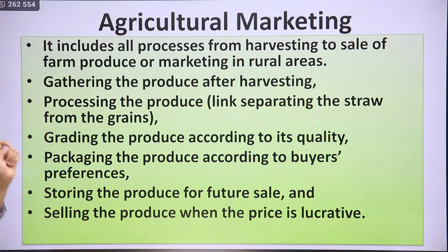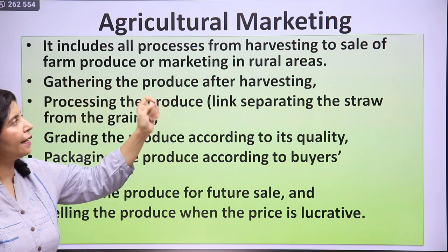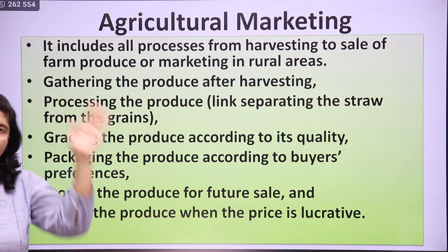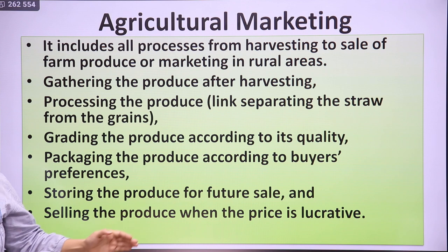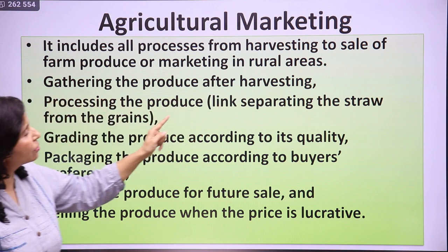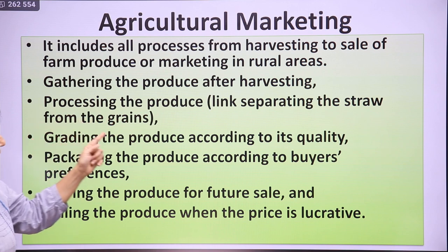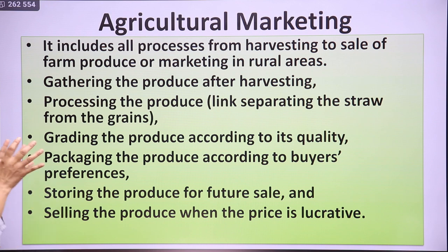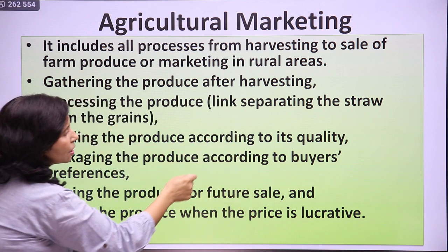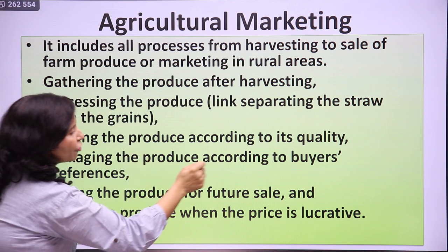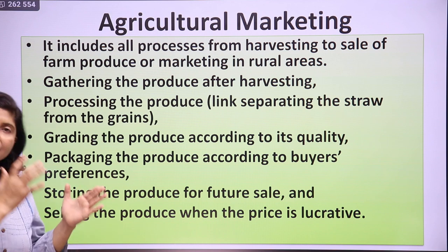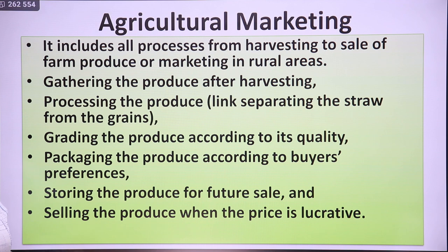Agricultural marketing includes all processes from harvesting to the sale of farm produce. The whole process from sowing seeds to the sale of agricultural produce is called agricultural marketing. It includes: gathering produce after harvesting; processing — separating husk from grains or stem from grains; grading the produce according to quality; packaging according to buyers' preferences; storing for future sale; and selling when prices are high in the market.